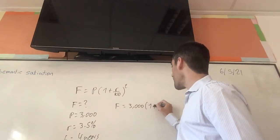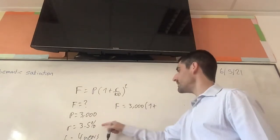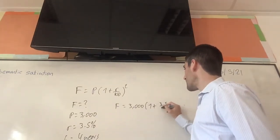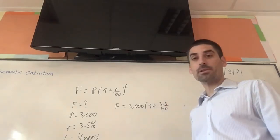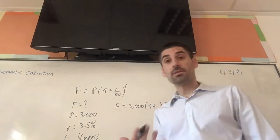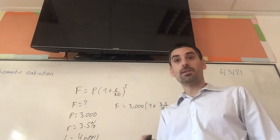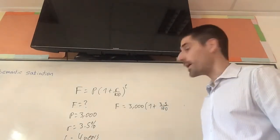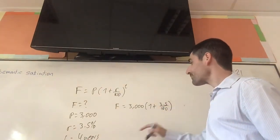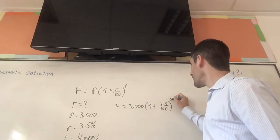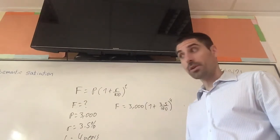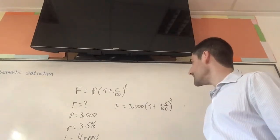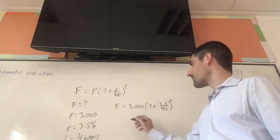Multiplied by one plus the interest rate as a decimal — the interest rate is three point five percent, so it has to be zero point zero three five. You need to be careful with that. Then to the power four, because it is four years. So all you have to do is get your calculator.